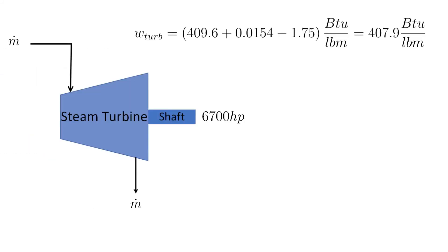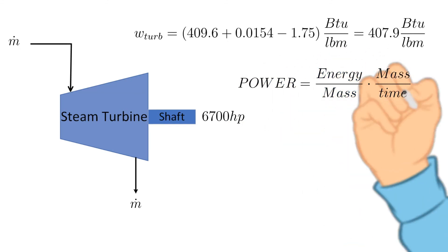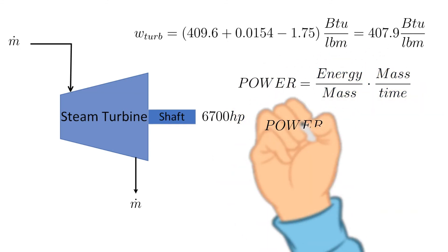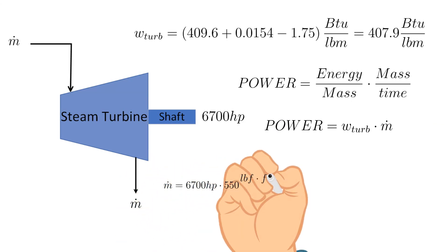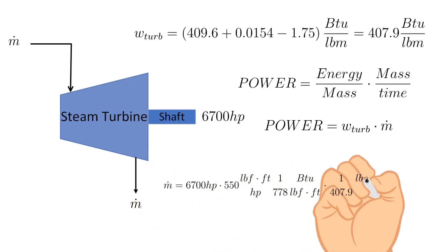Now that we have the specific work of the turbine we can use it to determine the mass flow rate of the steam. The turbine shaft horsepower is given. By definition, power is equal to the product of the quantities energy per mass and mass per time as shown here. We can now solve for the mass flow rate of the steam through the turbine. The result is 11.6 pounds mass per second.